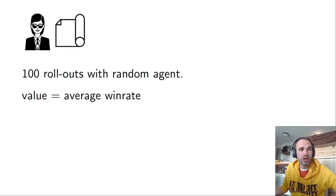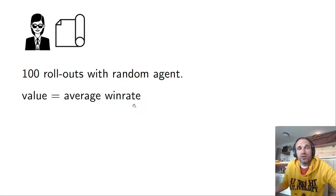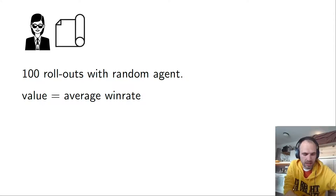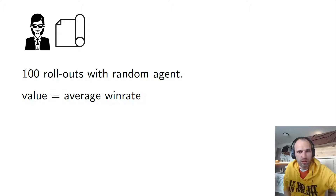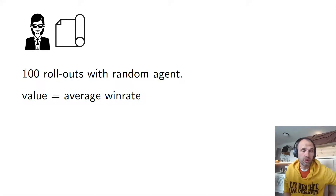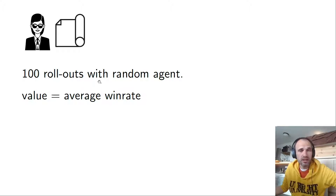We can also have a different way of evaluating a state: do 100 rollouts with a random agent and average the results. That could be a value we assign to that position. It may have some randomness involved in determining the value, but it returns a real number and tells you something about how good the position is — so that would be another possible value function.